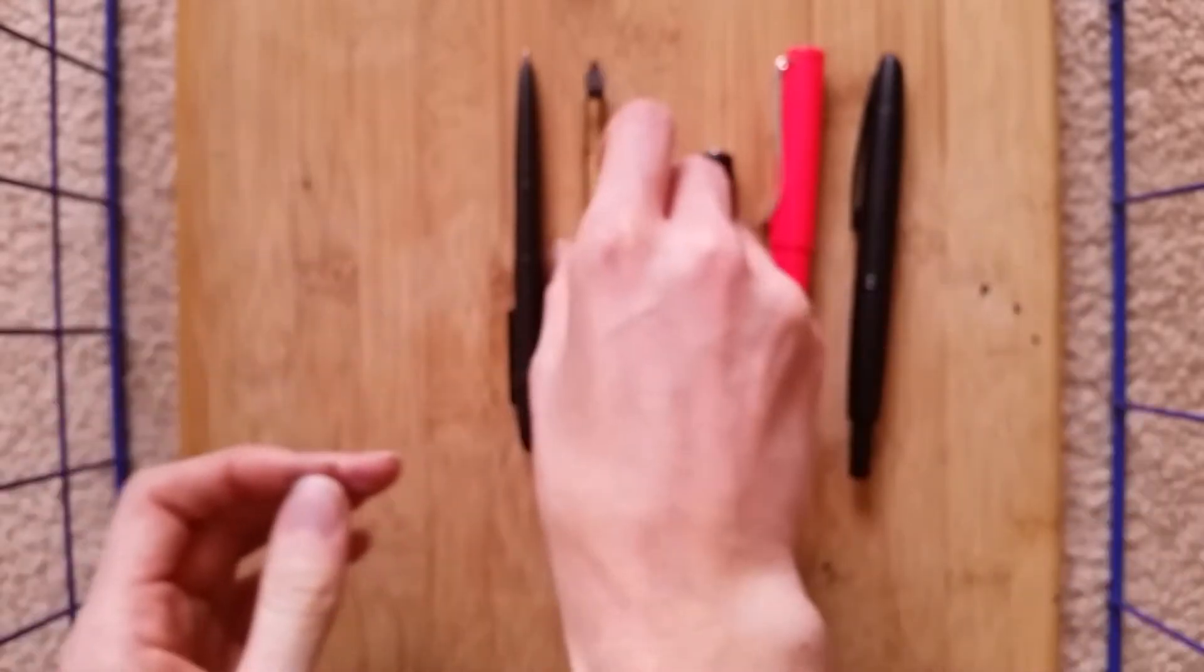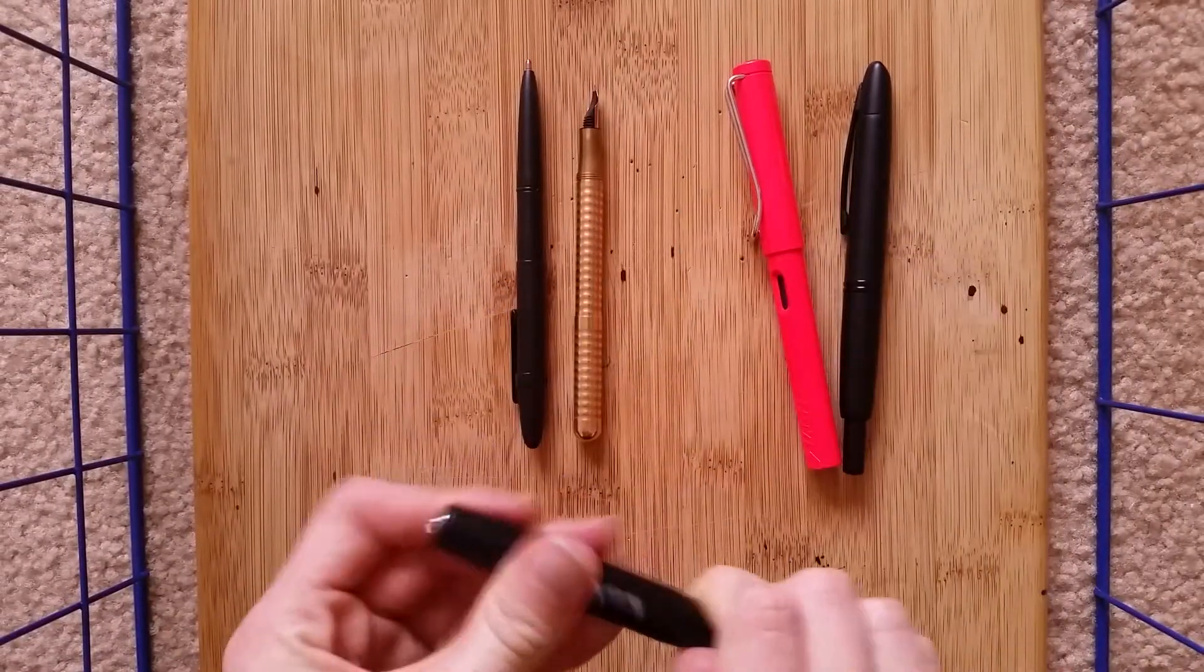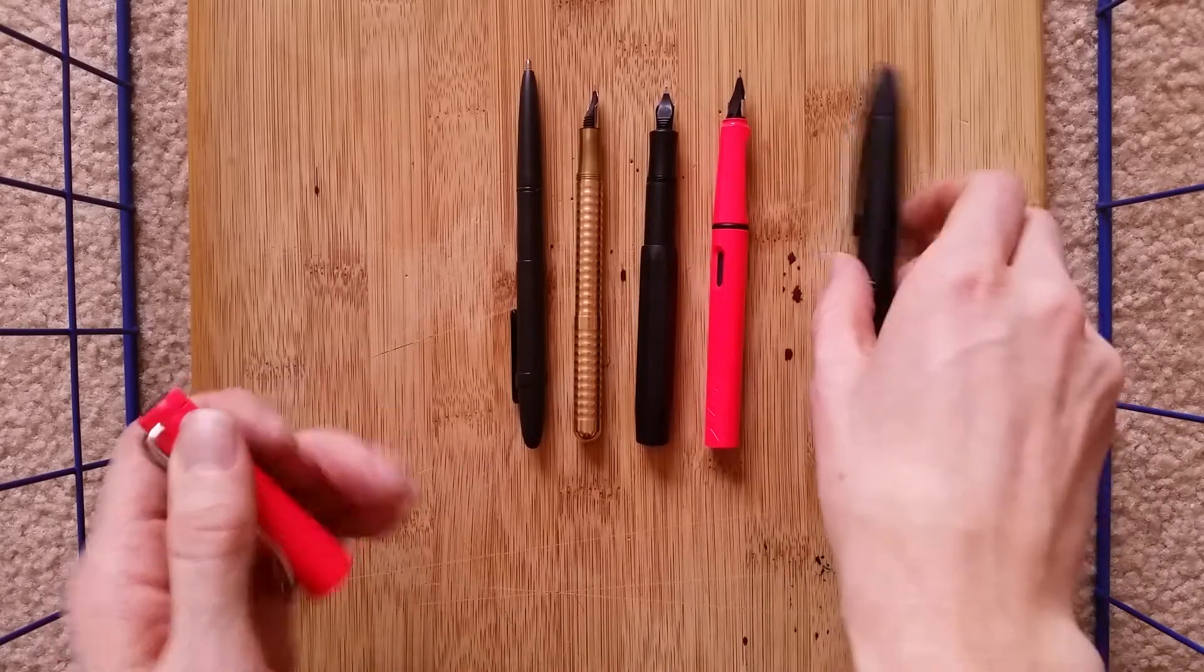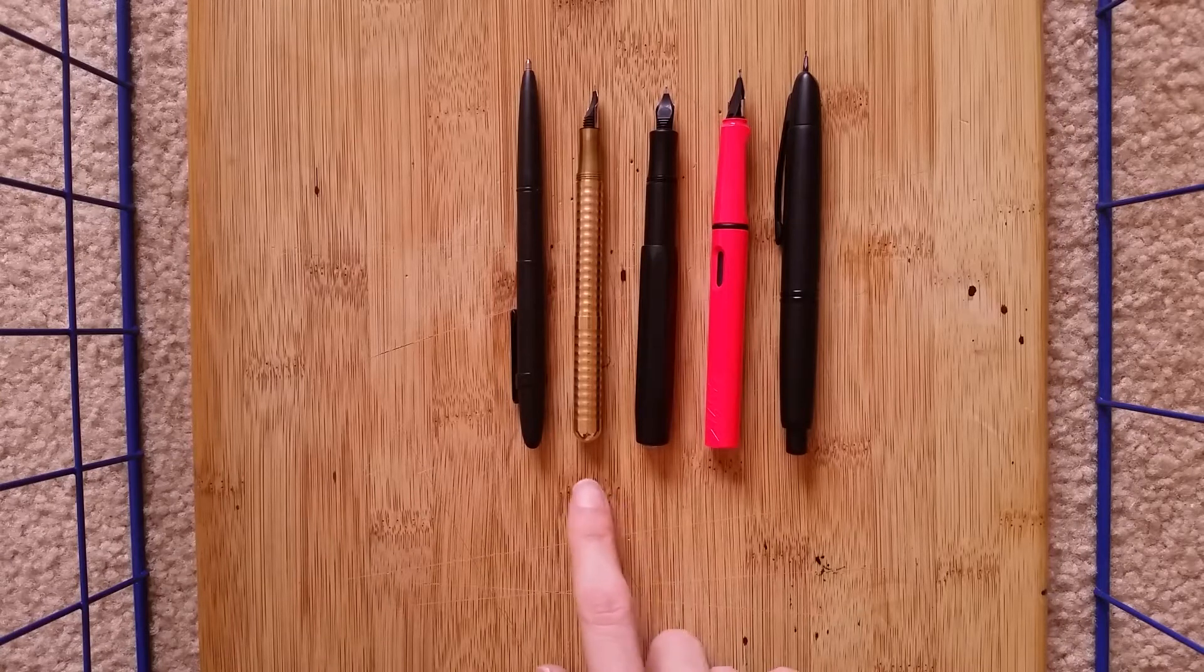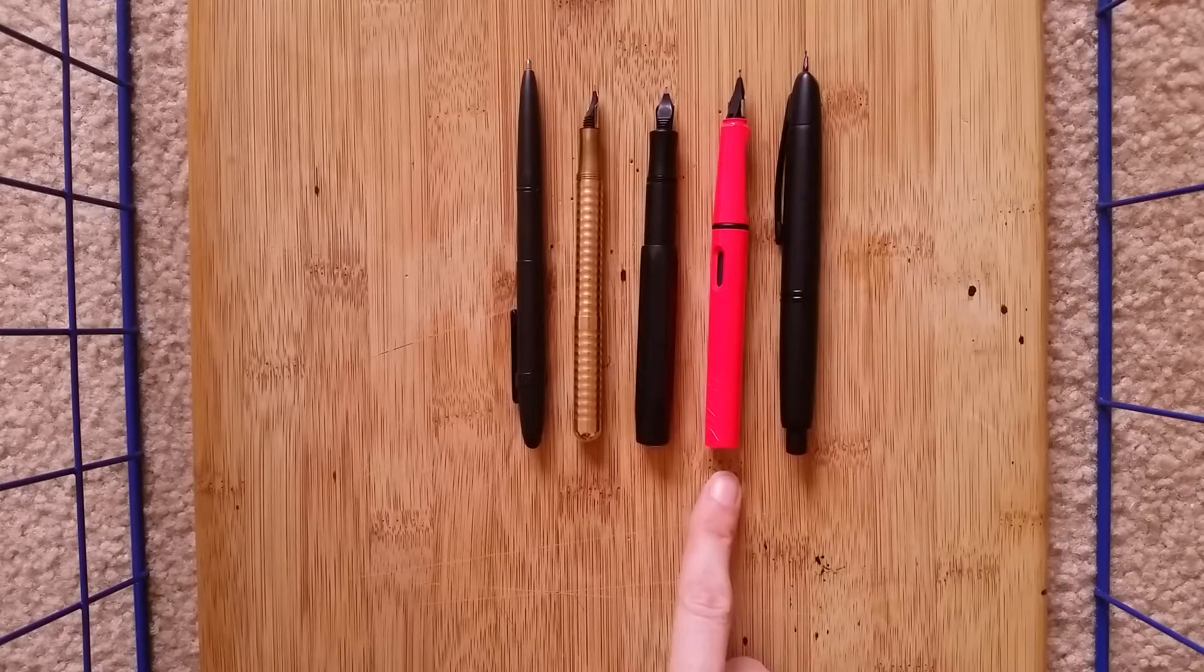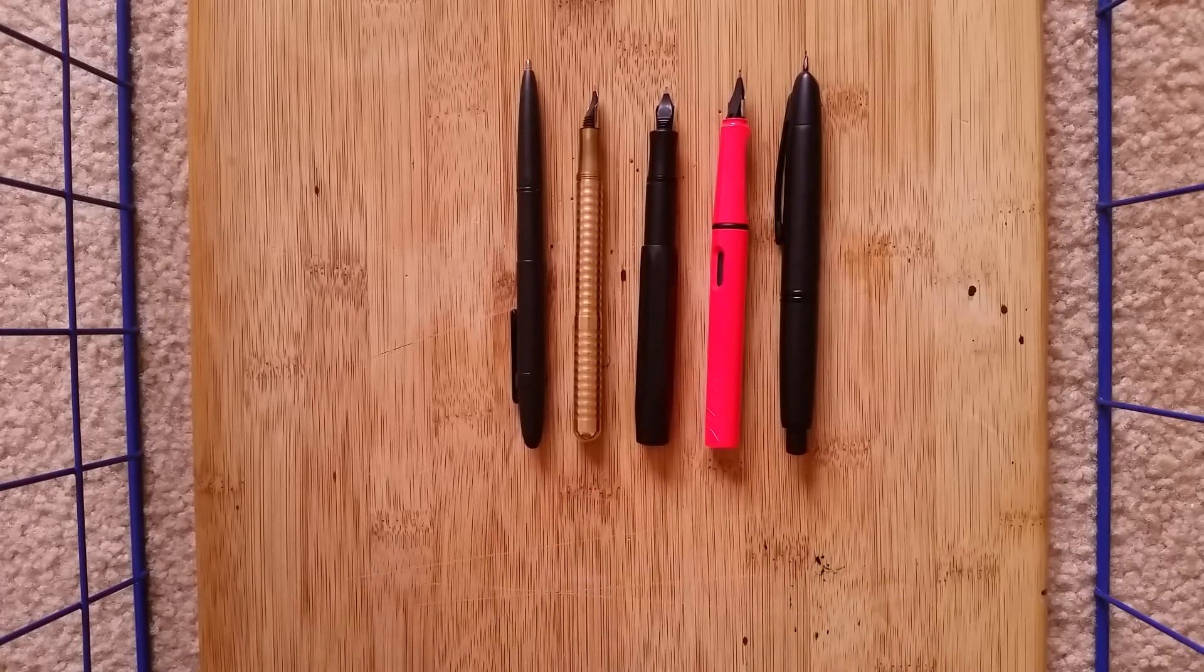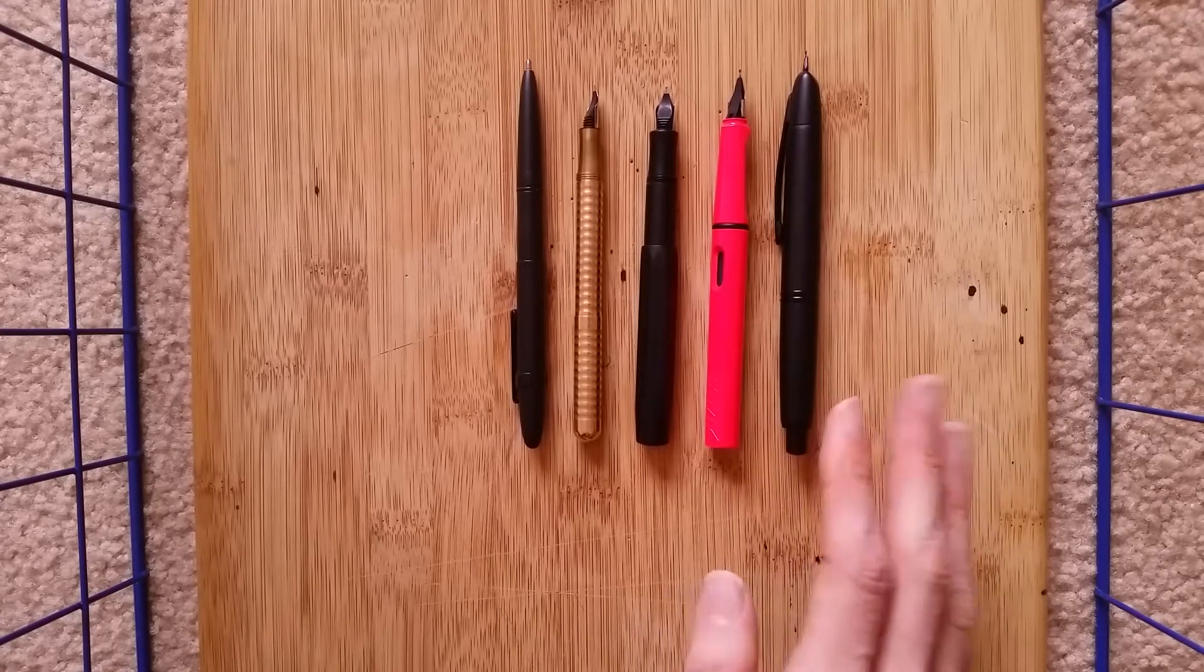So that guy screws on like that. In contrast the All-Sport is a screw cap and then it just uses friction to post. I'm going to leave these guys unposted because I don't write with the Safari posted. So you can see that when it's posted it's a decently sized pen, it's roughly the same length as the Safari, just about the same length as the All-Sport to maybe a millimeter or so difference. So it becomes a decently sized pen when it's posted.